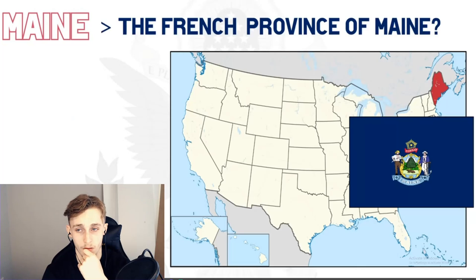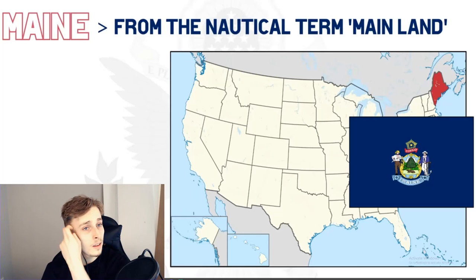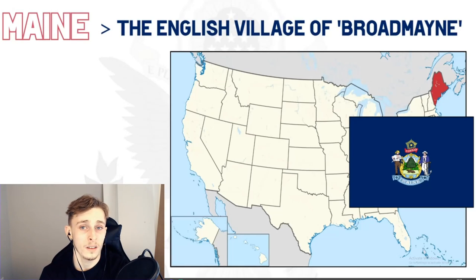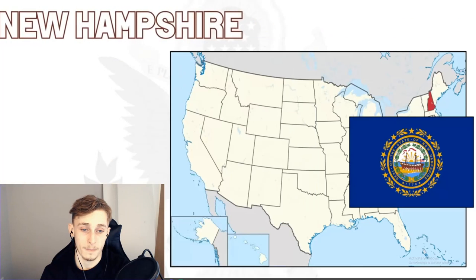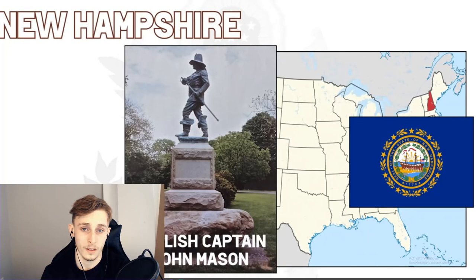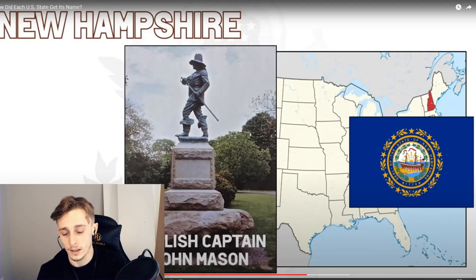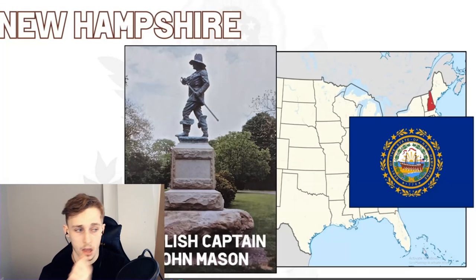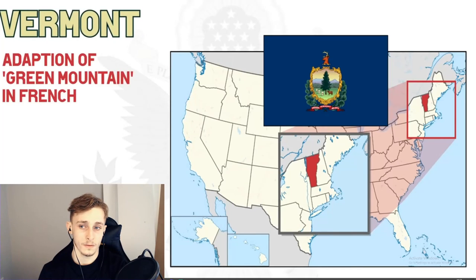Jumping to the northeast: Maine's name origin is unclear. One theory is it was named after a French province; another is that it derives from a practical nautical term, 'the mainland'; and a more recent proposal is that it was named after the English village of Broad Maine, the family estate of Sir Ferdinando Gorges, the colony's founder. New Hampshire was named by English captain John Mason, who obtained a land patent to establish a colony and named it after the county of Hampshire in England.